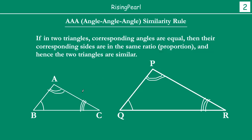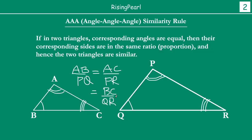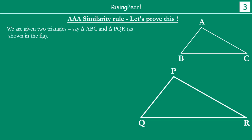What we are going to prove is that just on the basis of corresponding angles being equal, we can indeed prove that their corresponding sides are in the same ratio, and so we can say these two triangles are similar. That means we are going to prove that AB by PQ will be equal to AC by PR, which will be equal to BC by QR. And if we can prove that, then we can say triangle ABC is similar to triangle PQR. So let's get started.